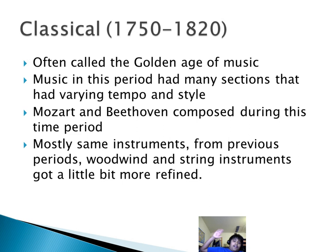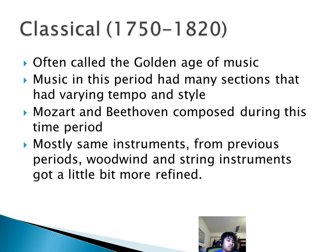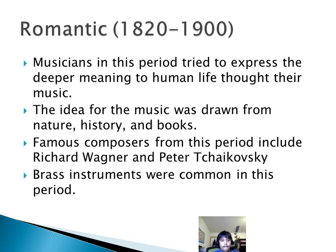It could go very slow, then very fast, then very slow again, switching quite randomly at points. Mozart and Beethoven composed during this time period — two very famous composers. Mostly the same instrument types were used as in previous periods, from woodwinds to string instruments, though both types got a bit more refined and better made.